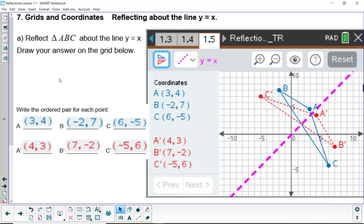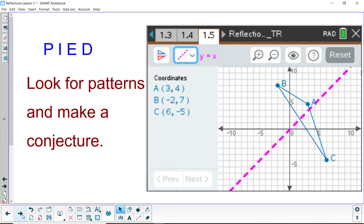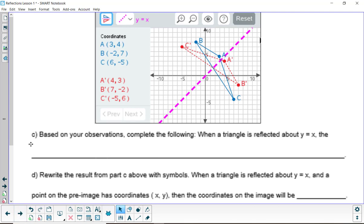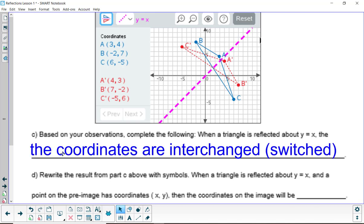So here are the answers to 7A if you need to change anything there. And then we played with that. And so when a triangle is reflected about the line y equals x, what happens here? Well, it turns out that the coordinates are just interchanged. X becomes y and y becomes x. You can also use the word switched. Do not say they're opposites of each other. They're not opposites of each other. That's different.